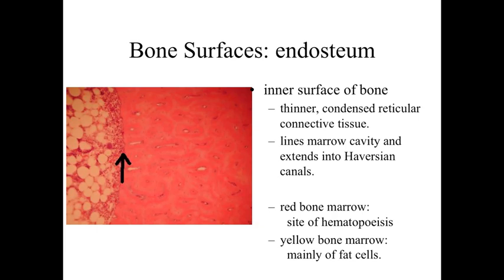The endosteum also extends into the Haversian canals, the larger structures found within the bone itself. Within the endosteum and the marrow cavities, we can have either red bone marrow or yellow bone marrow. Red bone marrow is where we see lots of nucleated cells involved with hematopoiesis — blood cell formation. In other locations in the marrow cavity, we essentially have fat cells, giving that chicken wire appearance, and that region is referred to as yellow bone marrow.